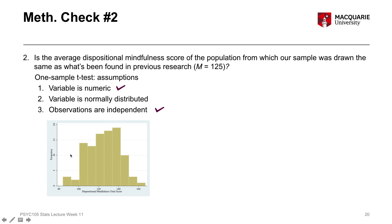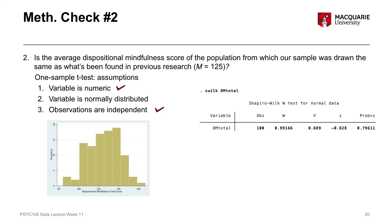The only assumption we need to formally check is the normality of the distribution of dispositional mindfulness. Looking at the histogram, it does appear to be approximately normally distributed with a bell curve shape. Remember that normal data never looks perfectly textbook-shaped, but this looks pretty good — approximately normal. We can confirm this by running the Shapiro-Wilk test, which tests normality. For the normality assumption to be met, we need a non-significant Shapiro-Wilk result — a p-value bigger than 0.05. Our p-value here is 0.796, which is well above 0.05, confirming the normality assumption is met.